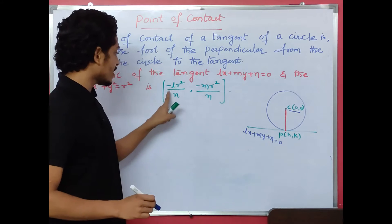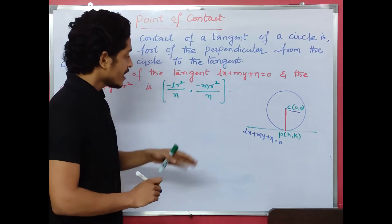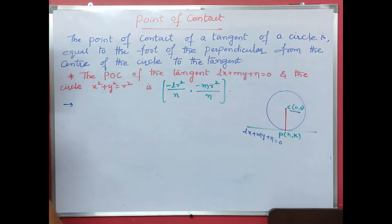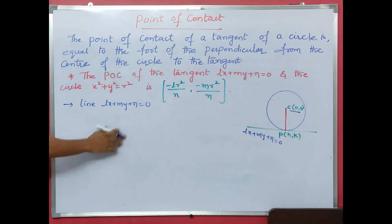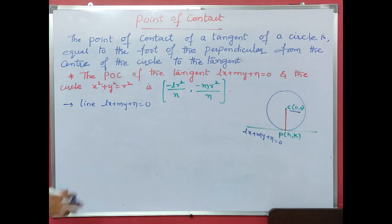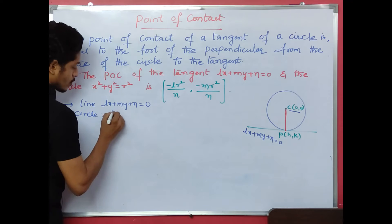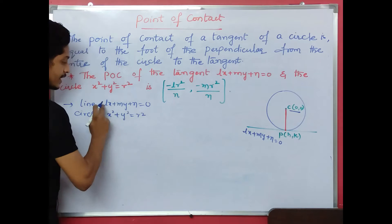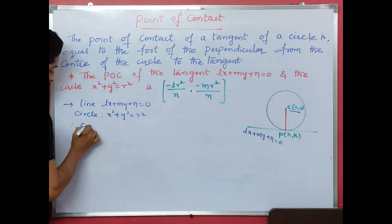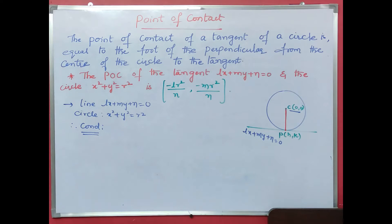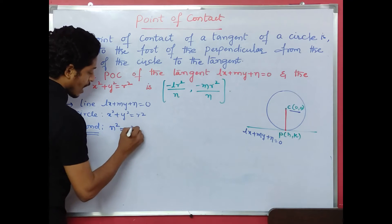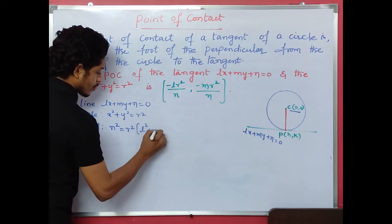The point of contact h comma k equals to minus lr squared by n, comma minus mr squared by n. The tangent is lx plus my plus n equals to 0, and the center of the circle is 0 comma 0. The condition is n squared equals to r squared into l squared plus m squared.